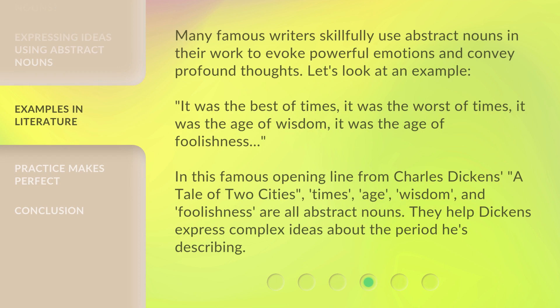Many famous writers skillfully use abstract nouns in their work to evoke powerful emotions and convey profound thoughts. Let's look at an example. In this famous opening line from Charles Dickens' A Tale of Two Cities, Times, Age, Wisdom, and Foolishness are all abstract nouns. They help Dickens express complex ideas about the period he's describing.